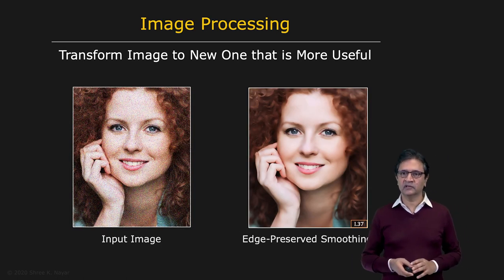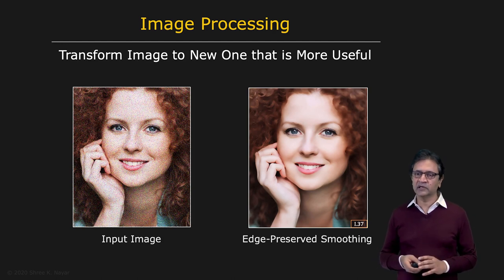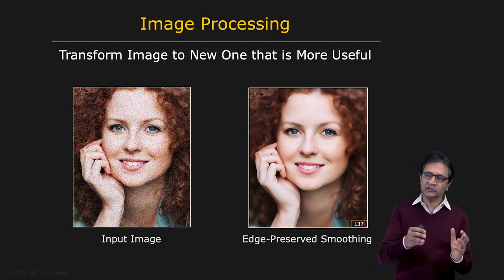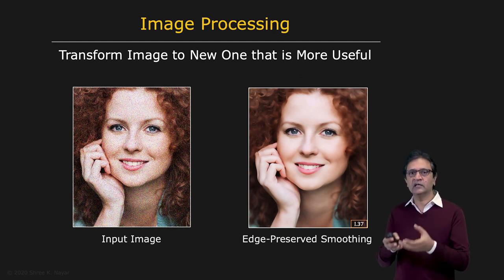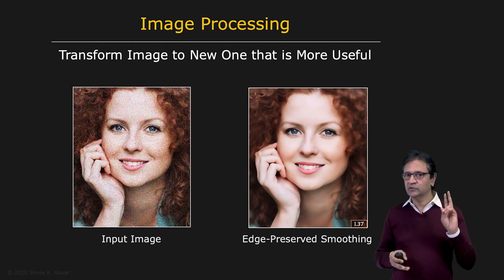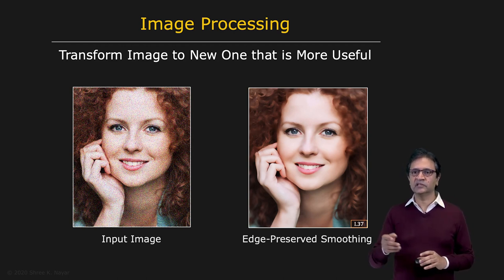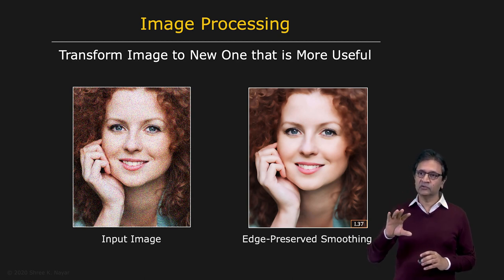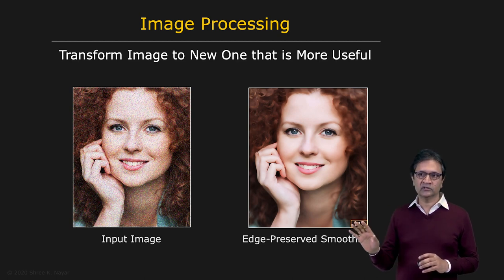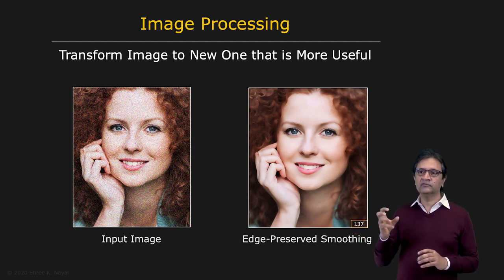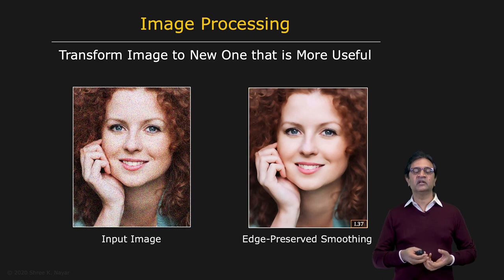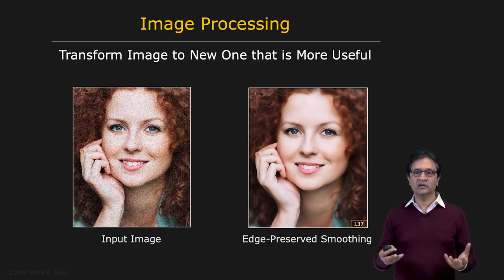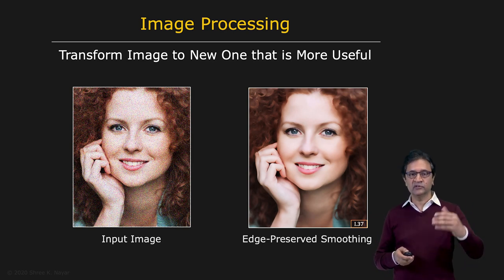Next, we look at image processing. Coming back to general grayscale or color images, how do we transform an image into a new image that is more amenable to higher levels of visual processing? We're going to devote two lectures to image processing. Here's an example: you have an image on the left that's very grainy — it has a lot of noise. By applying image processing tools, you can get the image on the right where pretty much all the noise is gone, and at the same time the visual features — the edges and the colors — are all preserved. We'll come up with an entire suite of image processing tools as we go into higher levels of visual processing.